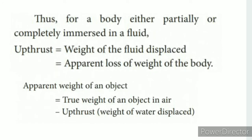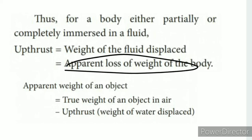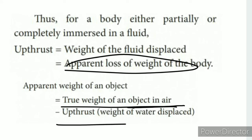The apparent loss of weight is how much weight the object seems to lose when immersed. To find the true weight of the object in air: apparent weight in fluid equals true weight minus upthrust, where upthrust equals the weight of water displaced.